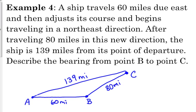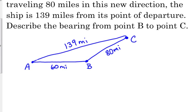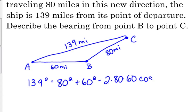Now, what we have to do is describe the bearing from point B to point C. So we're going to have to find that angle there at B. So law of cosines for angle B would say that we set up B squared is equal to A squared plus C squared minus 2 times A times C times the cosine of angle B.